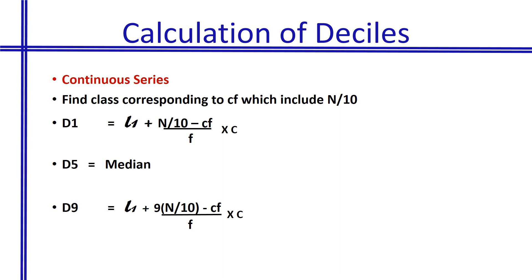For deciles in continuous series, we find the class corresponding to the cumulative frequency that includes n/10. For D1, the formula is: L1 + (n/10 − Cf)/F × C. D5 equals the median. For D9, the formula is: L1 + (9n/10 − Cf)/F × C. For D6 and D7, the numerator changes to 6 and 7 respectively. All other steps remain the same as in the median calculation.